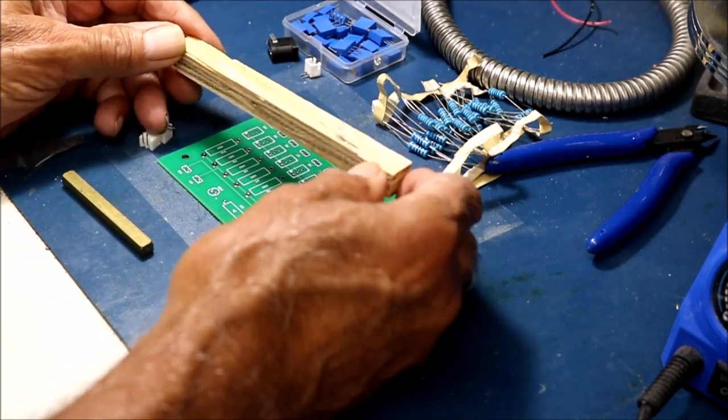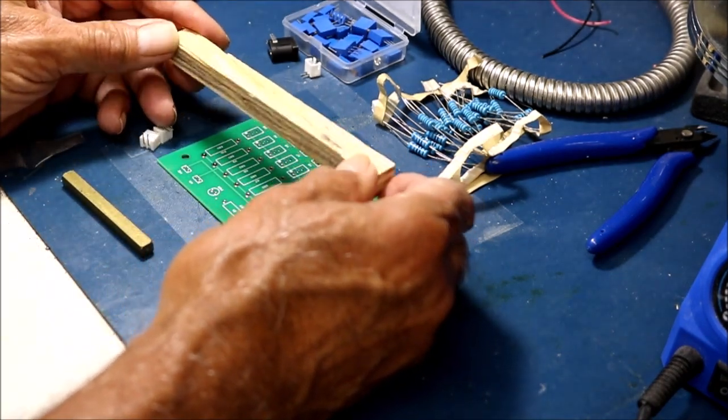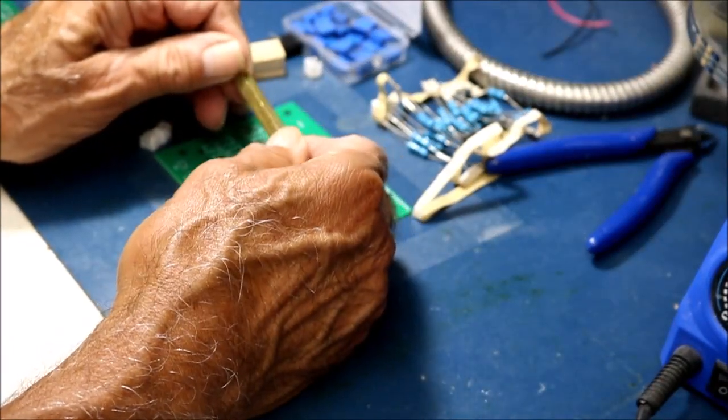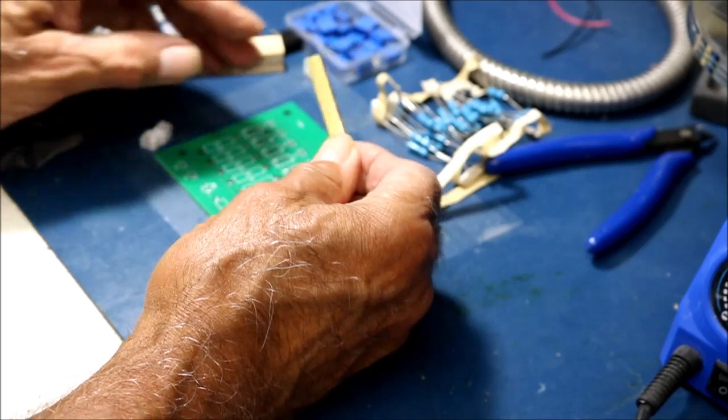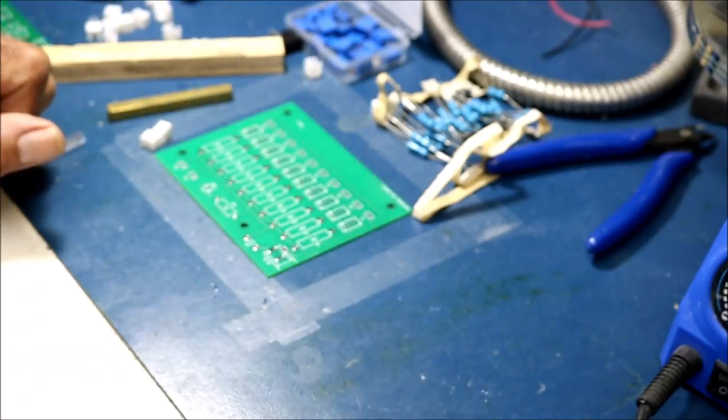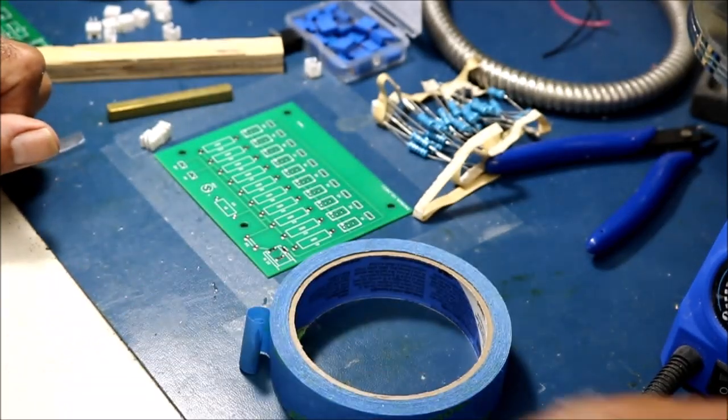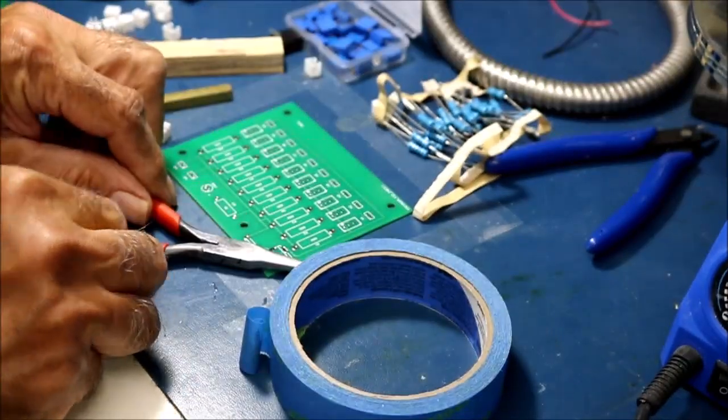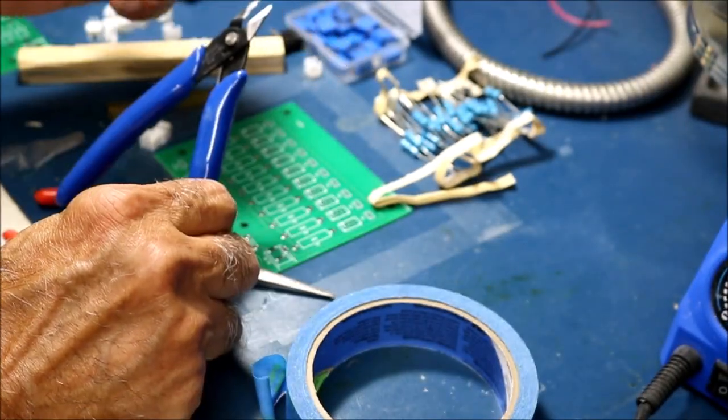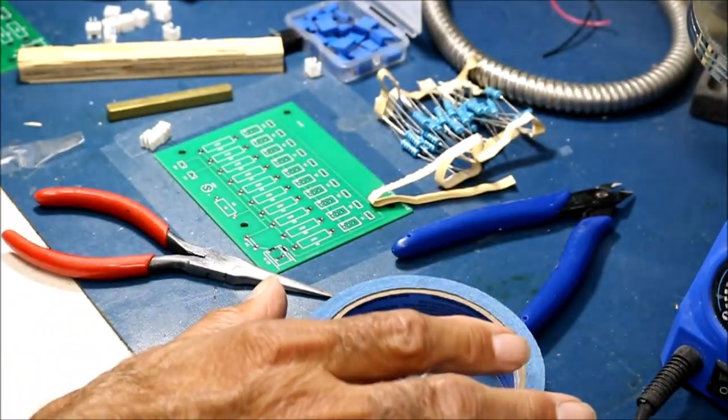You'll also need some spacers. This is a half inch plywood spacer and this is a quarter inch spacer made out of brass. It can be made out of wood or plywood or whatever you have available. You also need some tape, needle nose pliers, and flush cutters like these.